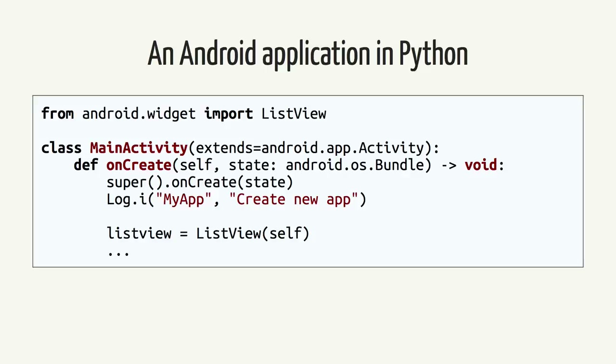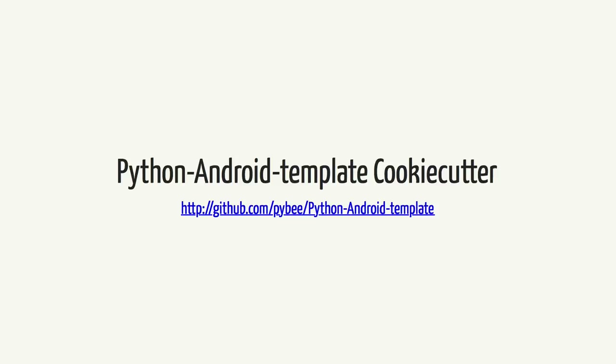So with Android, you take standard textbook Android APIs, convert them into Python syntax, compile Java class files, and ship it. Here's a snippet of Android code setting up a main activity — we import a ListView, this activity extends an Android Activity, when it's created it receives a Bundle as part of its state, we call the super method, log something, and construct a ListView. Python 3 type annotations provide the information needed to bind to the underlying strongly-typed Java methods. A cookie-cutter template handles the housekeeping — downloading pre-compiled Android support libraries, compiling Python code to Java, and packaging everything up.